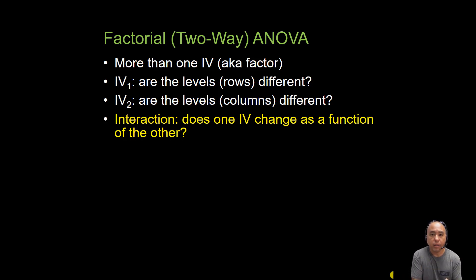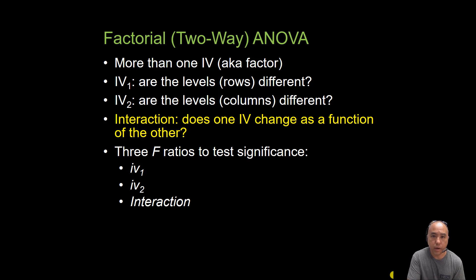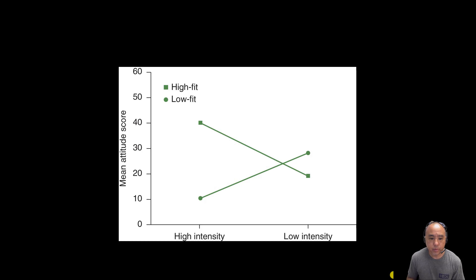In other words, does the effect of one factor depend on the effect of another factor? That is answered with what's known as the interaction. When you run the ANOVA, you'll get a summary table that is not that different from the one-way ANOVA — you get three F ratios. An F ratio is a ratio between true variance and error variance, and you'll get that for each of the main effects — independent variable one and independent variable two — as well as the interaction. So you'll get three null hypotheses tested.